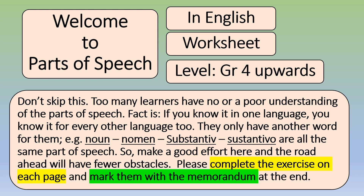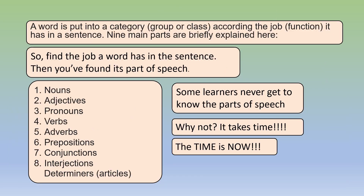Please complete the exercise on each page and mark them with the memorandum at the end. A word is put into a category, group or class according to the job or function it has in a sentence. Nine main parts are briefly explained here. So find the job a word has in the sentence, then you've found its part of speech.